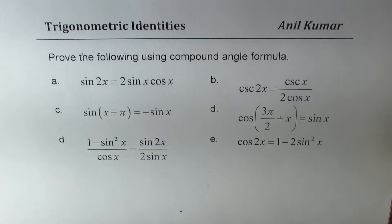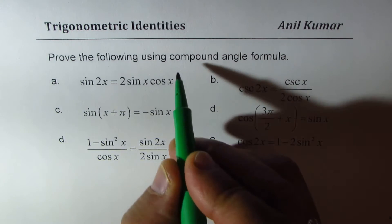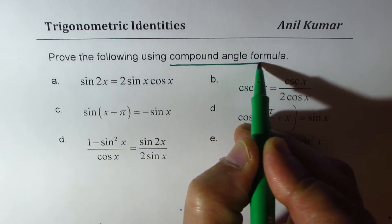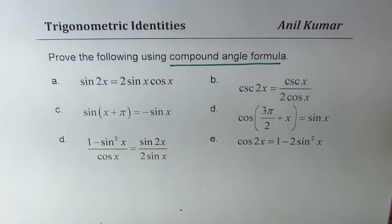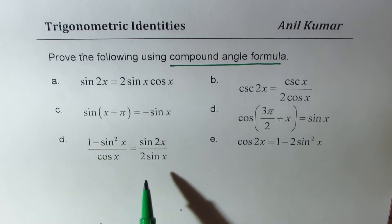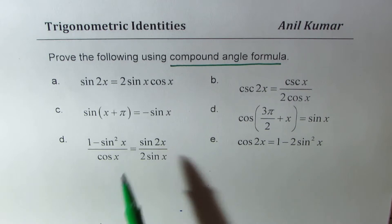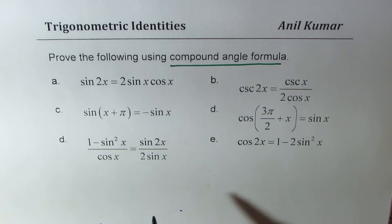I'm Anil Kumar. Welcome to my series on trigonometry. We'll now discuss how to prove trigonometric identities. I've taken up examples where we are going to use compound angle formulas. I'll soon give you the formula and then we'll prove the following identities. We have six of them here and we'll take them one by one.